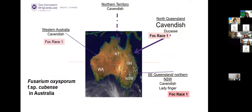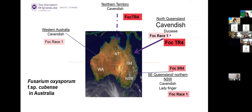Looking at the distribution of races within Australia: Race 1 is present in north Queensland on Ducasse, in southeast Queensland and northern New South Wales, and in Western Australia. Subtropical Race 4 became an issue, then Tropical Race 4 appeared in the Northern Territory and more recently has gotten into the principal banana-growing area around the Tully Valley in north Queensland. It's now on five properties, but they're doing a fantastic job trying to contain its spread.